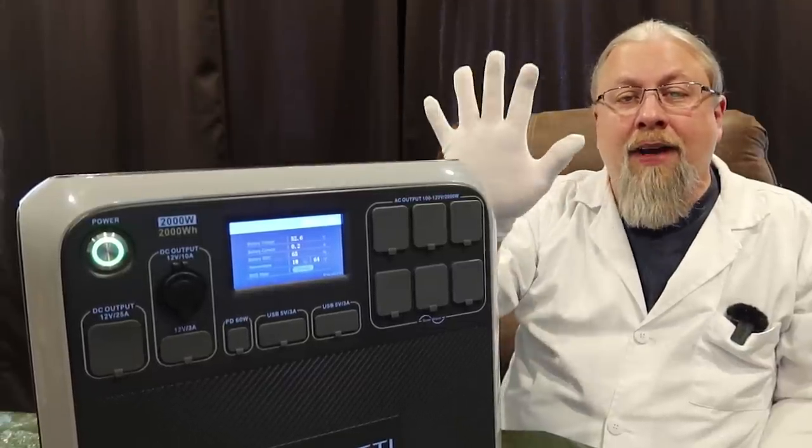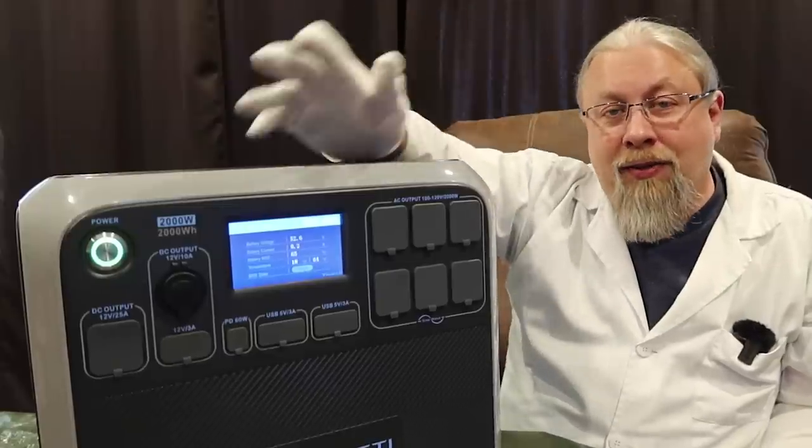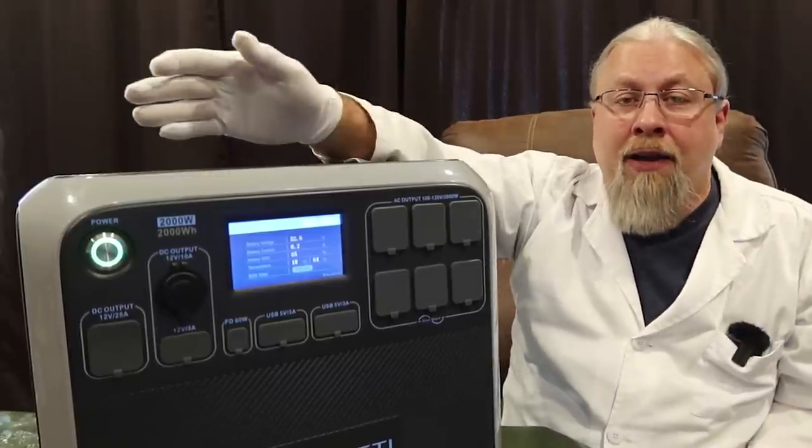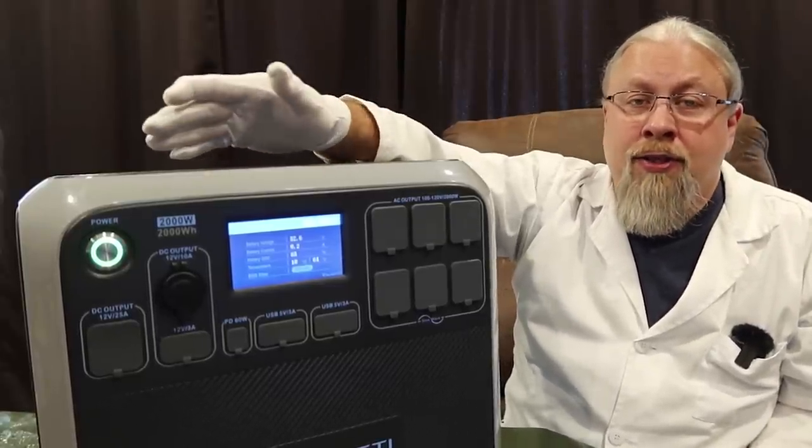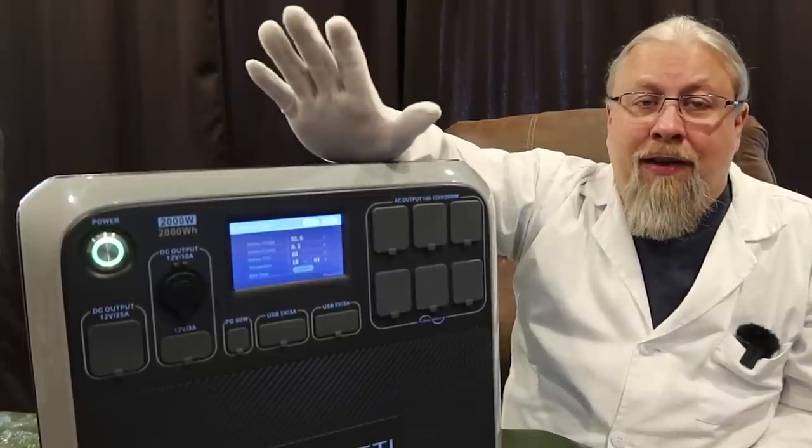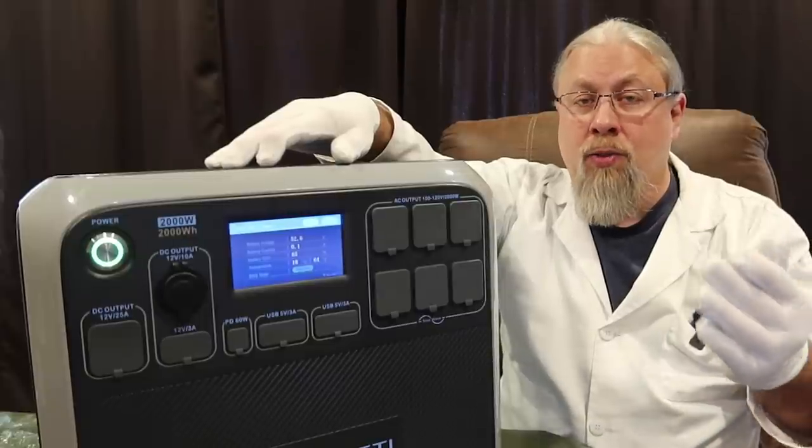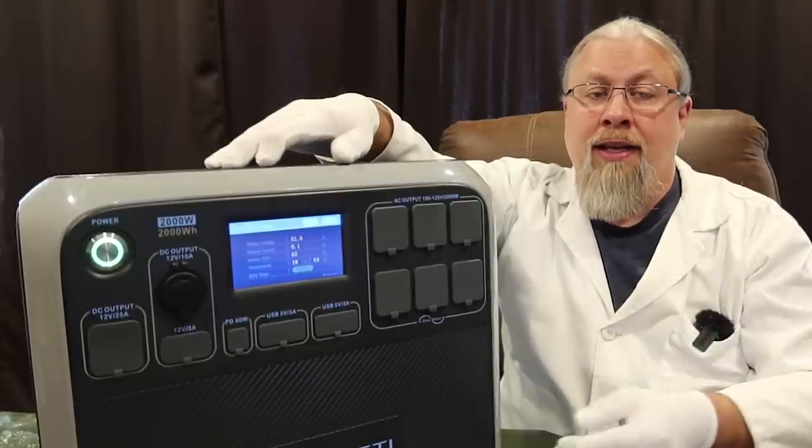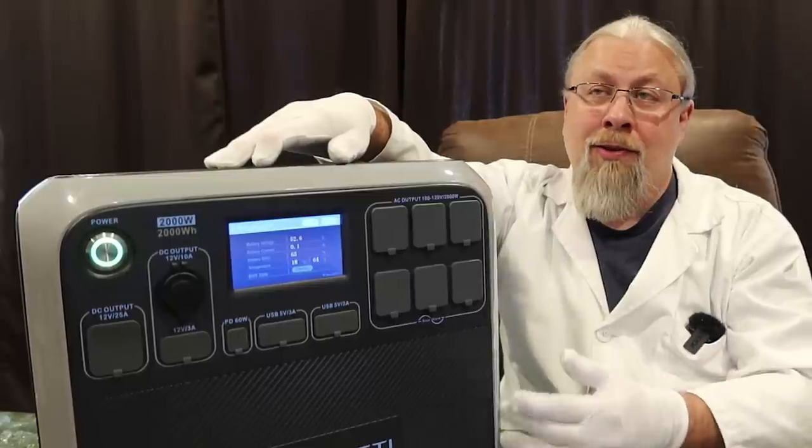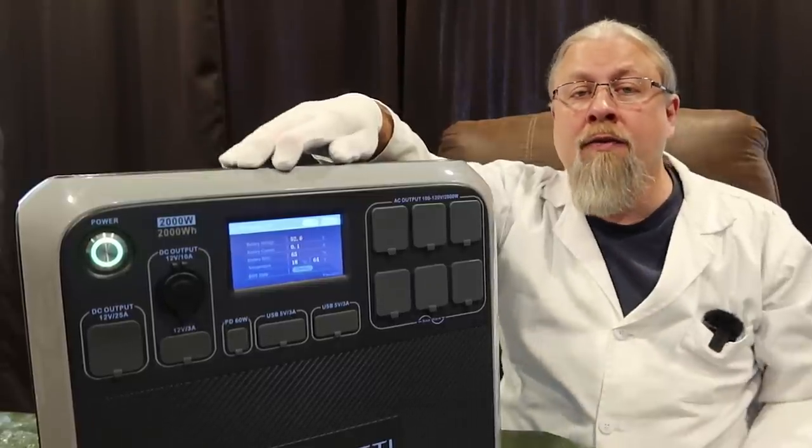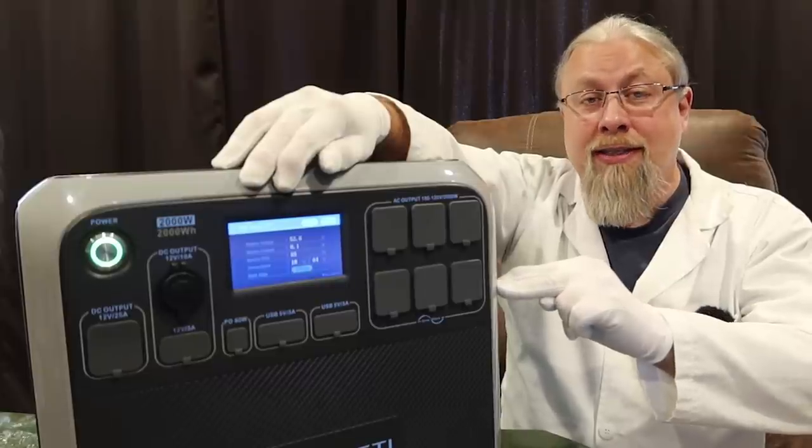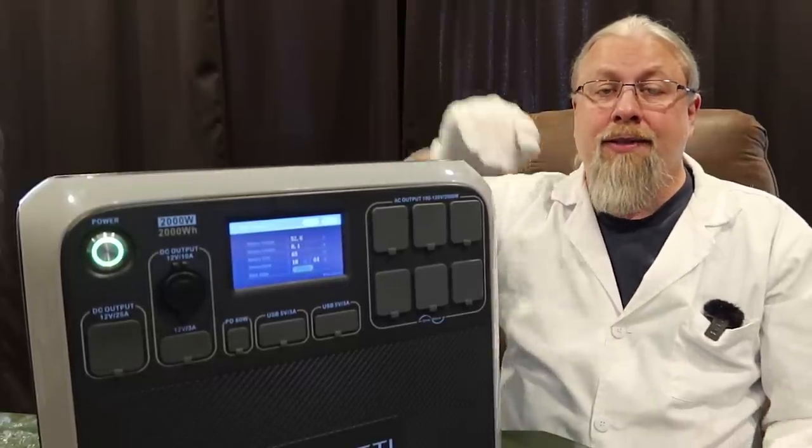Now, Bluetti claims this has five ways to charge, so let's go over each one of these. First method is from AC Wall Outlet. You can use the factory charger that comes with it, which charges at 400 watts, and that'll charge us from dead in just under five hours. You can also plug it into a 12 or 24-volt vehicle, and it's going to take about 16 hours to charge from a 12-volt vehicle or about eight hours from a 24-volt vehicle. And if you plug the maximum 700 watts of solar into this, you can charge in under four hours.